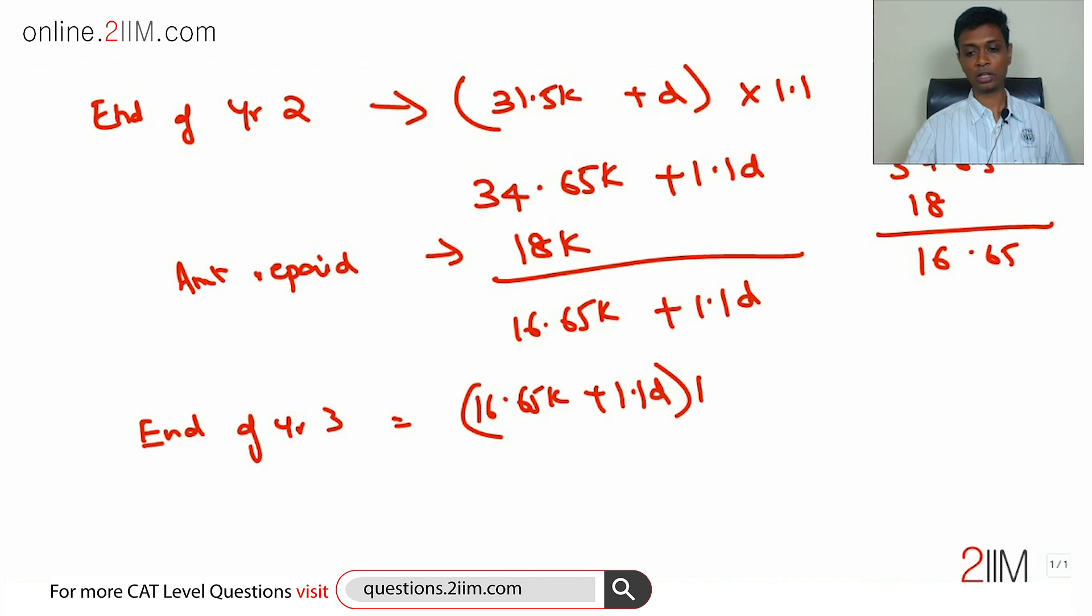So he pays off this number at the end of year 3. He has to pay off (16.65k + 1.1D) × 1.1, which is nothing but 18k plus D. Solve for this—we get D. There is still some amount of manipulation to do. We still have to find the value, but now this is a much more doable question.